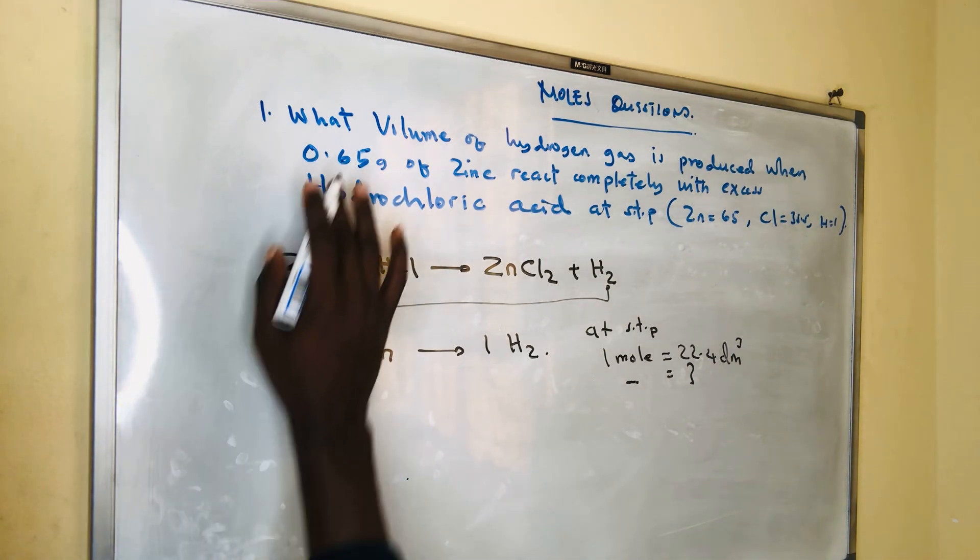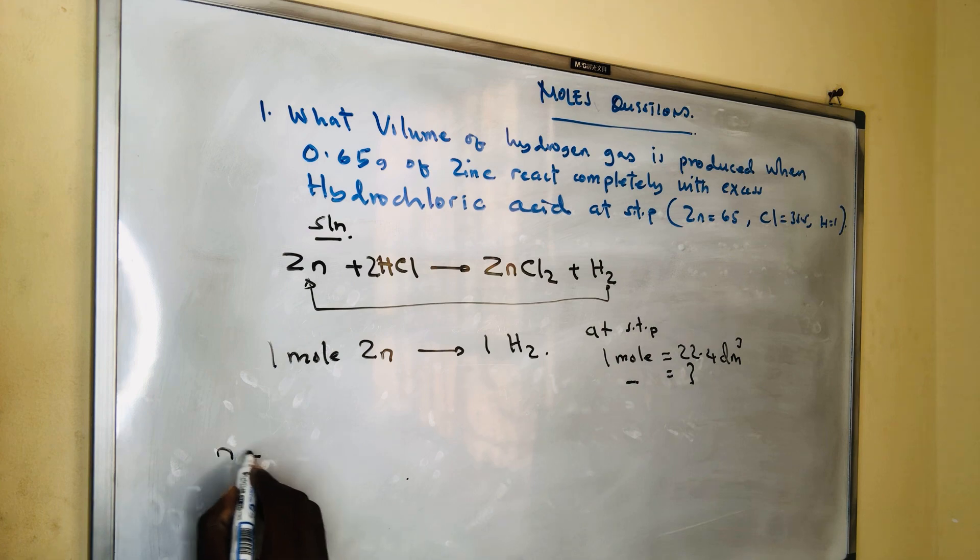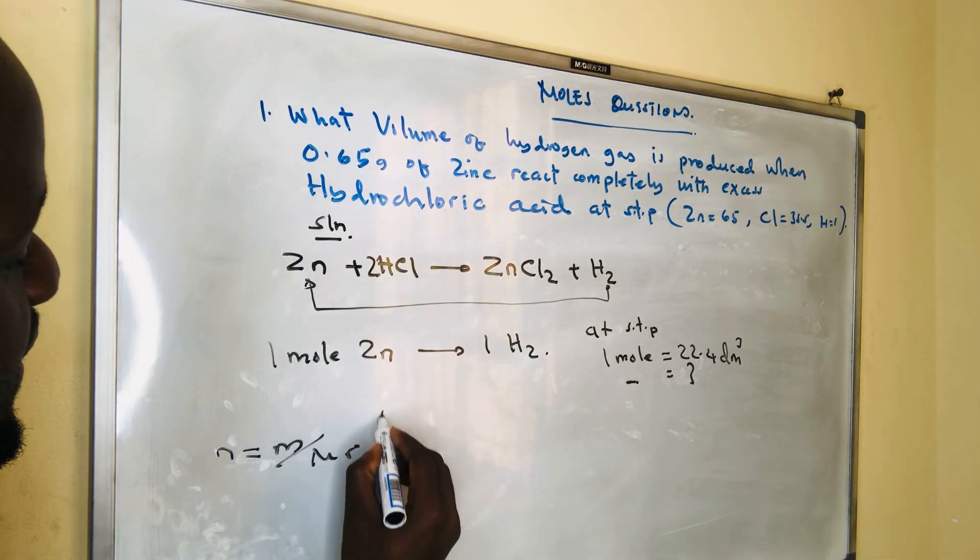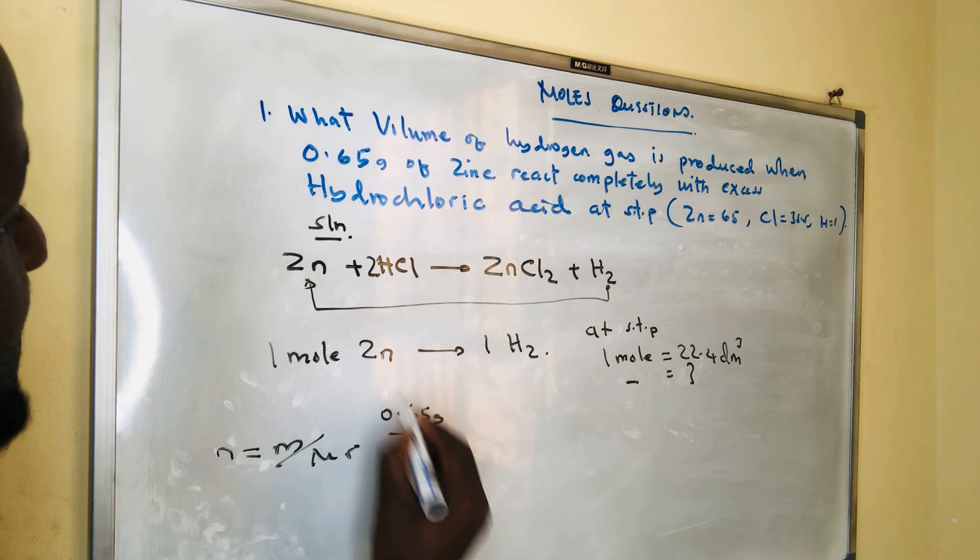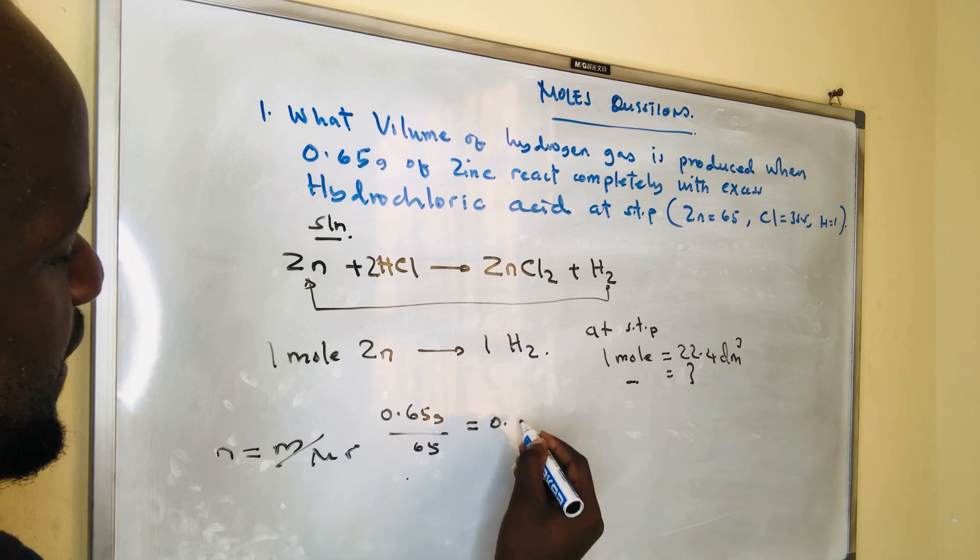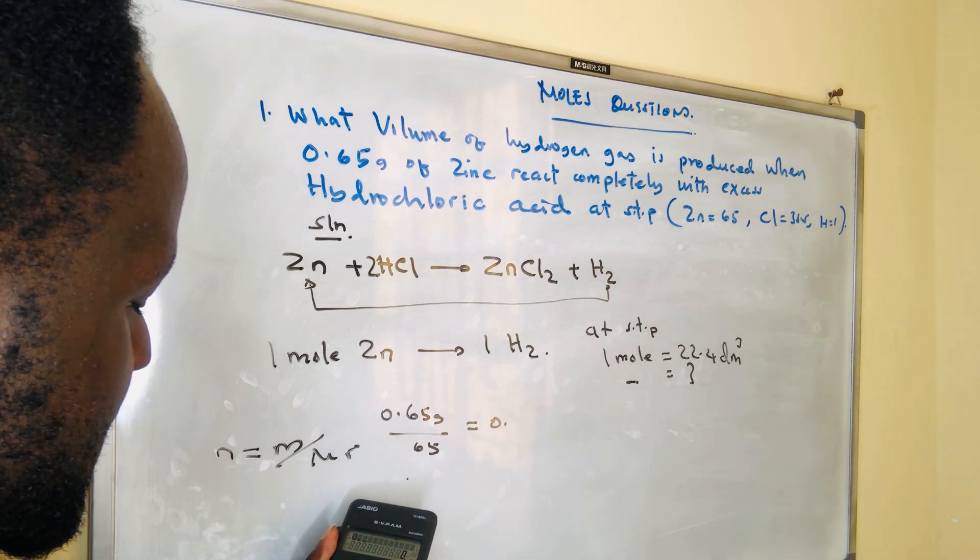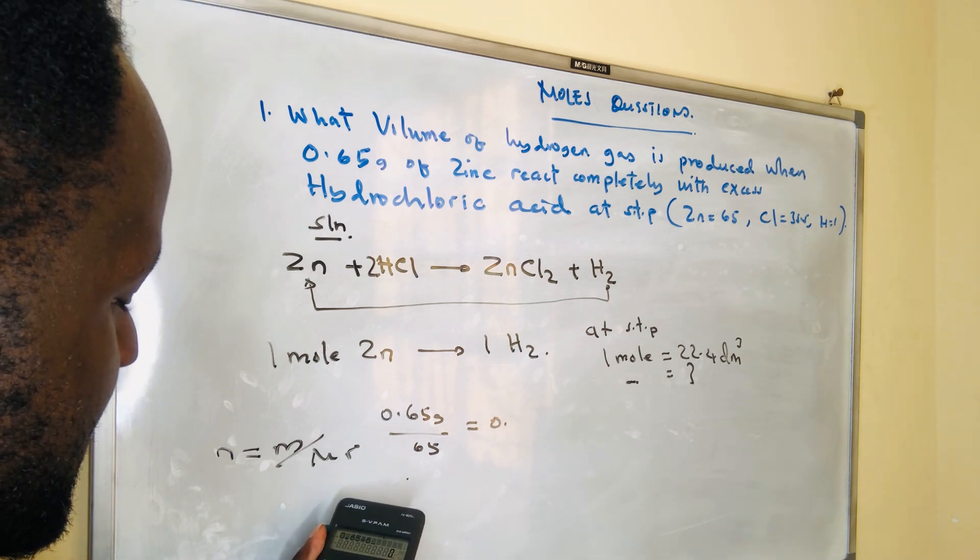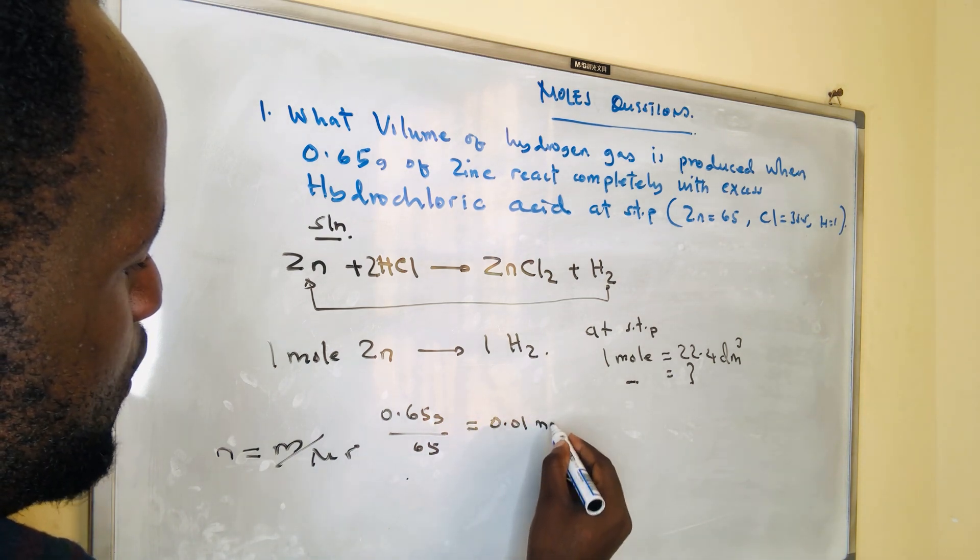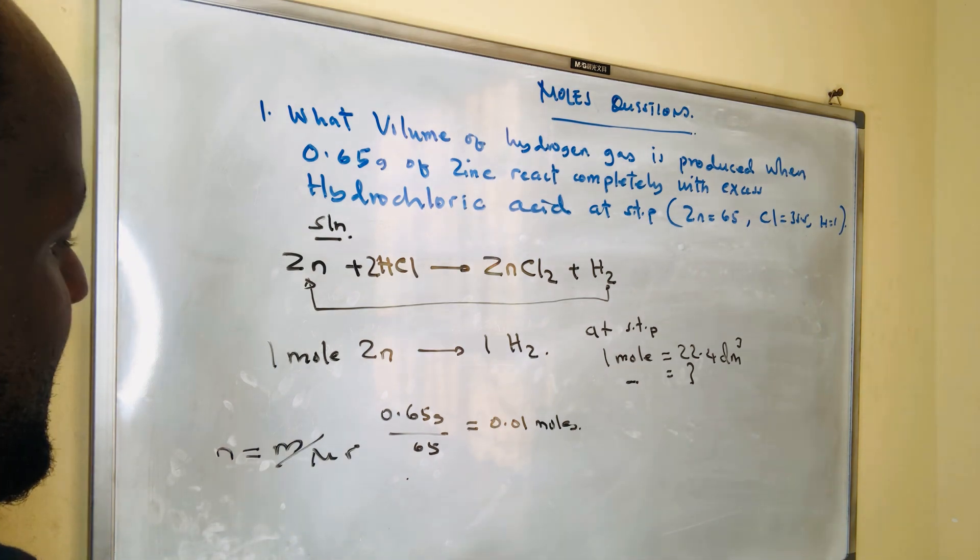But we were given mass. Number of moles equals mass over molar mass. So I'll take the mass of zinc which is 0.65 gram and divide by its molar mass which is 65. When you divide 0.65 by 65, you get 0.01 moles of zinc.